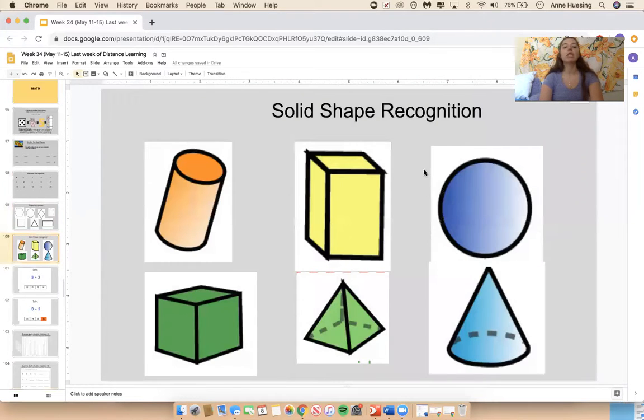Let's move to the 3D shapes or solid shapes. What is this one? Pyramid, this one? Prism, this one? Sphere, this one? Cone, this one? What was it? What was it? Cylinder. Cylinder, this one? Cube, good job, class.